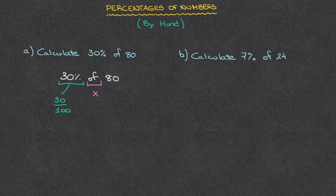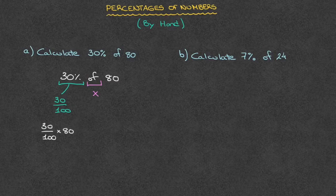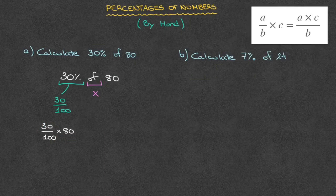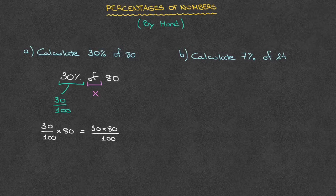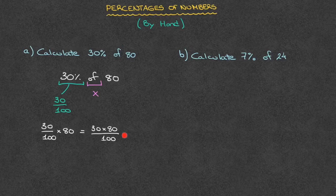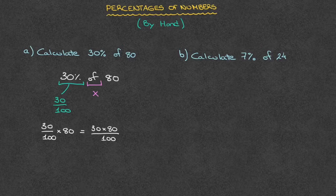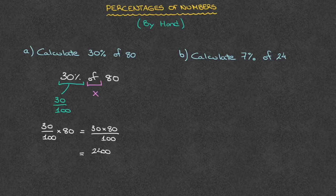In other words, to calculate 30% of 80, we need to calculate 30 over 100 times 80. Remembering that when we multiply a fraction by a number, all we need to do is multiply the numerator by that number, we can state that this equals 30 times 80 over 100. We'd start by taking care of the numerator and multiply 30 by 80, which is 2,400, and that's over 100.